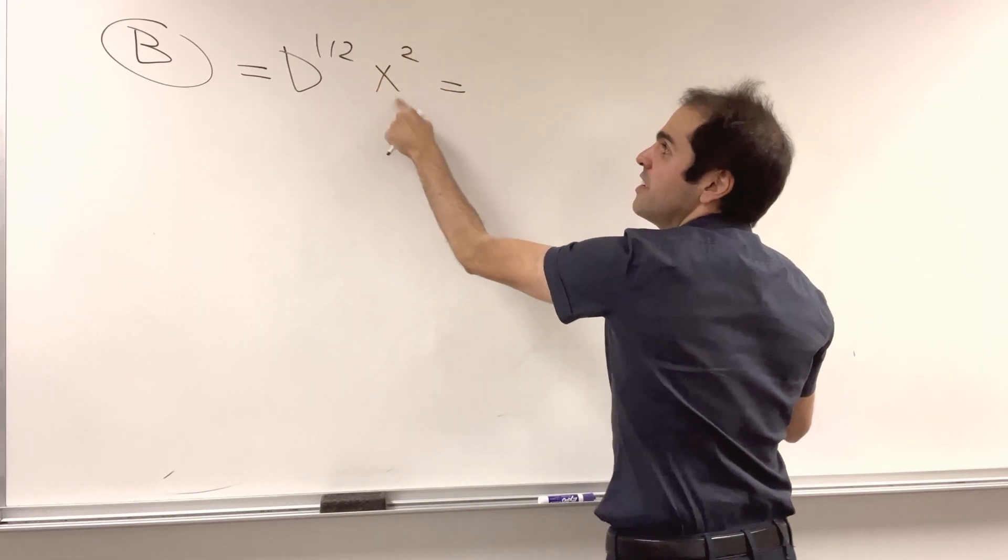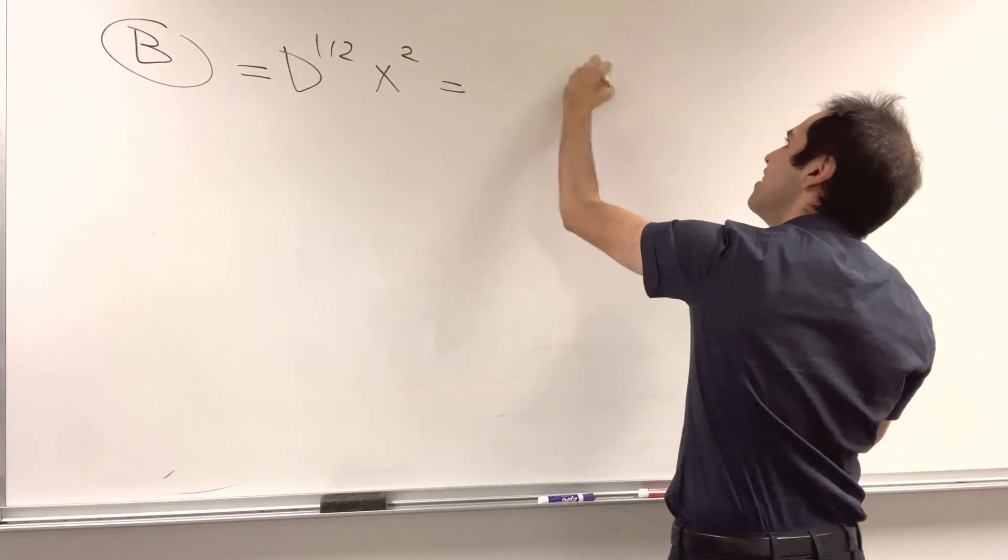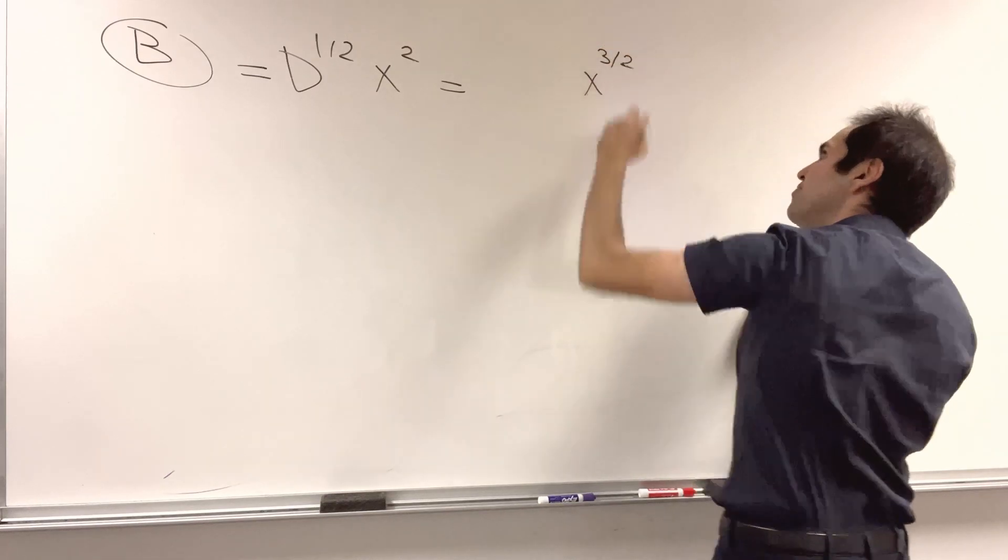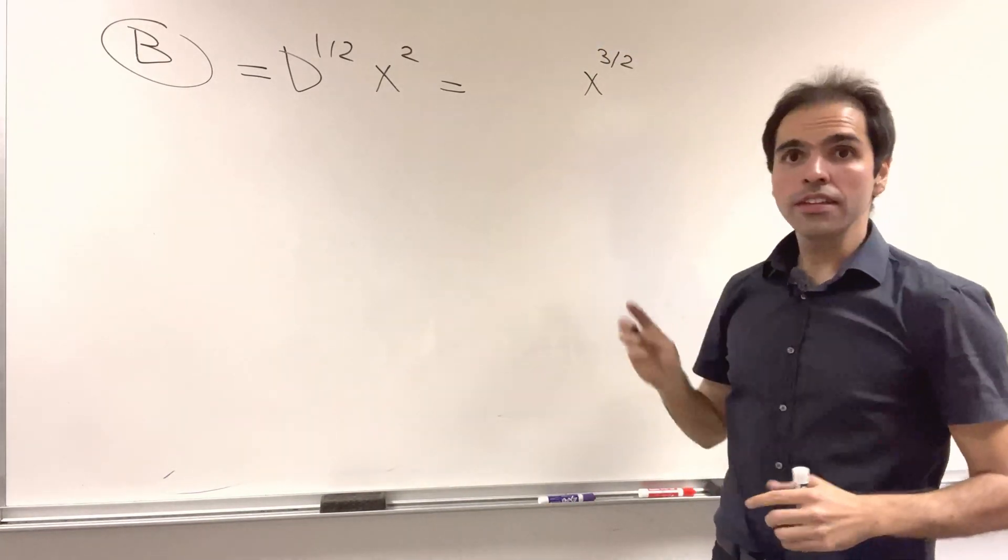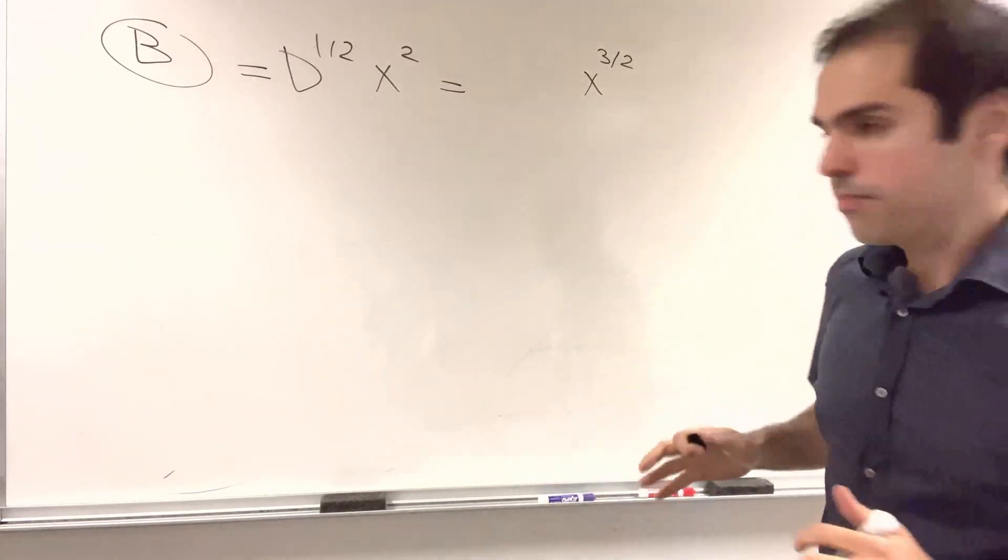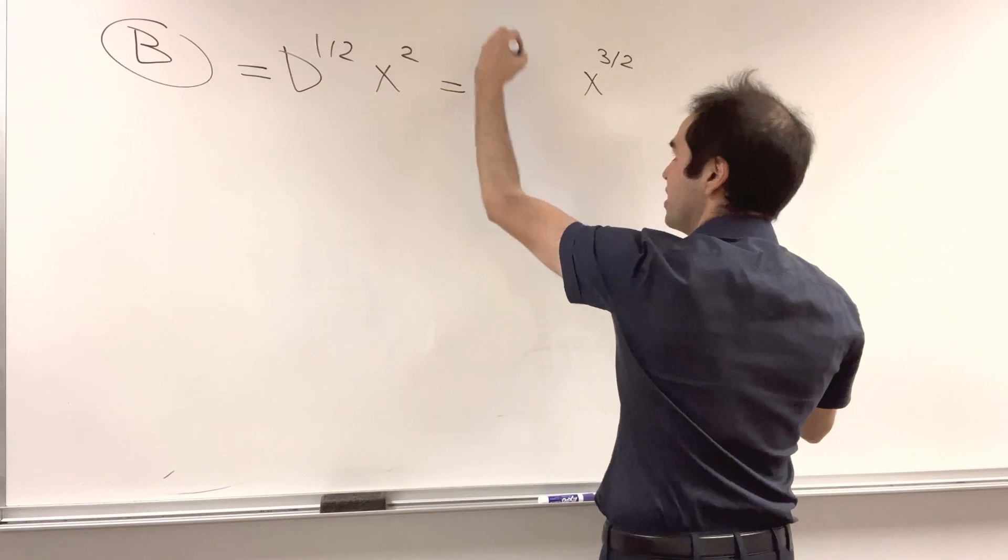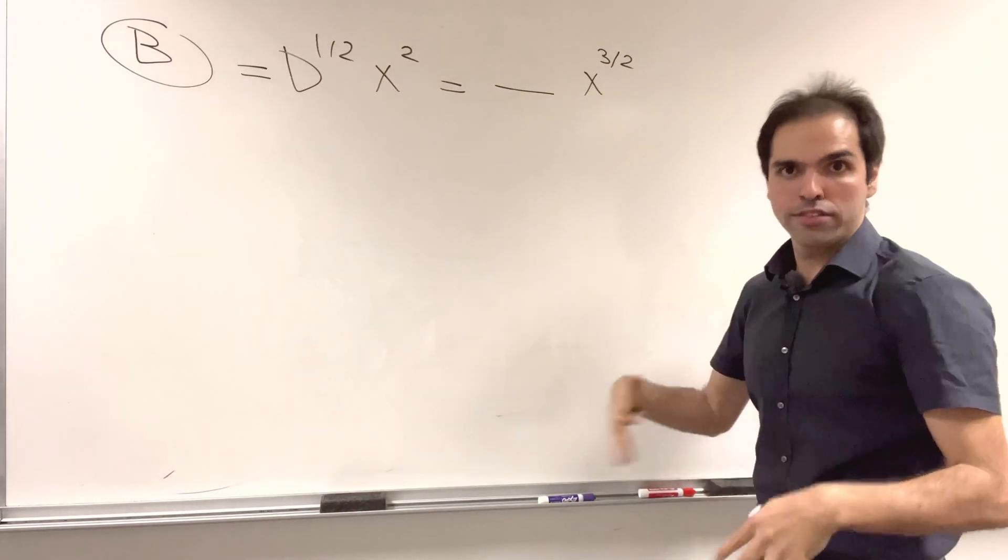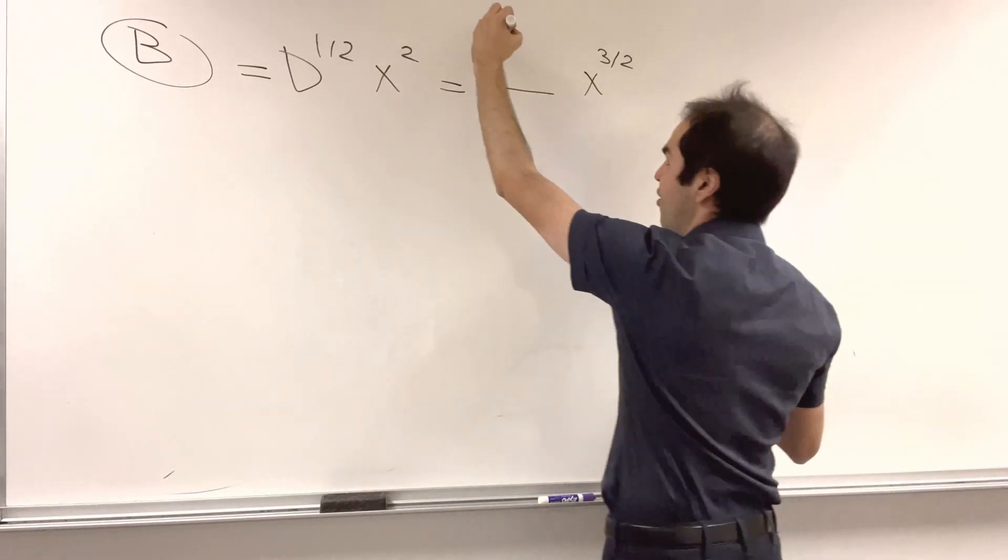One derivative means one power comes down, half derivative means half a power comes down. So something times x to the three halves, and the coefficients involve factorials, or more generally, gamma functions.